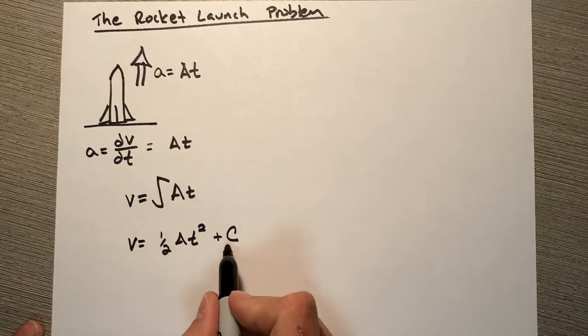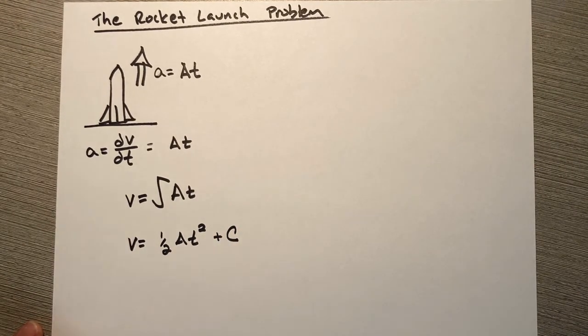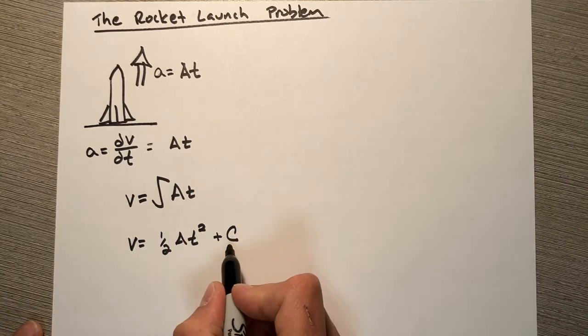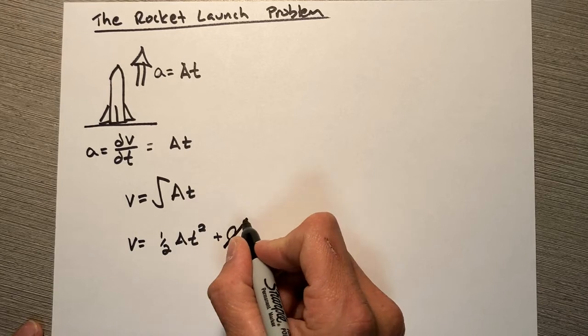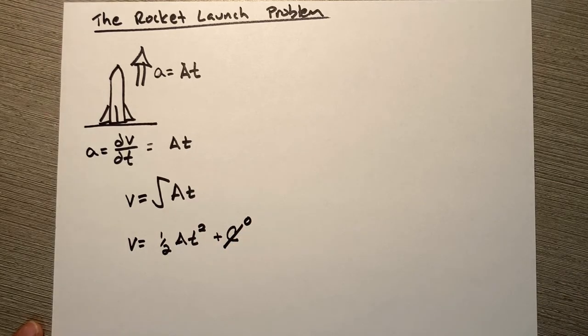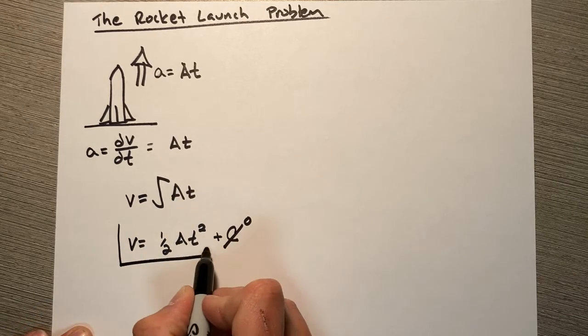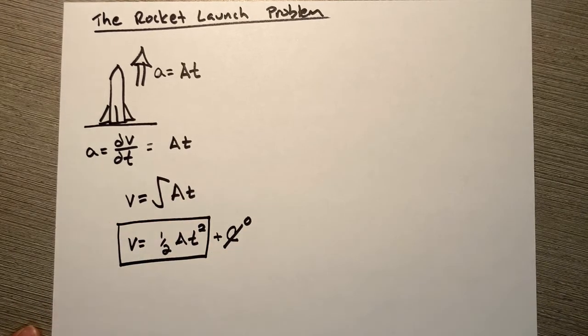In a lot of math classes it's okay to just leave the c this way, but this is physics, and so we need to think about what this c actually means. The c is the initial velocity, and remember the rocket started at rest, so the initial velocity is zero. So this term is the velocity of the rocket as a function of time.